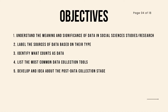The specific objectives that students should achieve by the end of this course are: to understand the meaning and significance of data in social sciences studies, to label the sources of data based on their type, to identify what counts as data, to list the most common data collection tools, and to develop an idea about the post-data collection stage — or what we call what happens next.